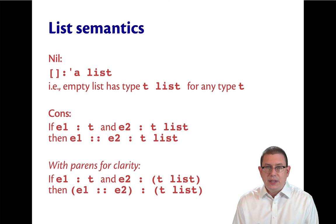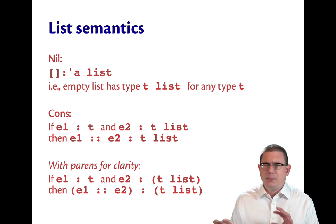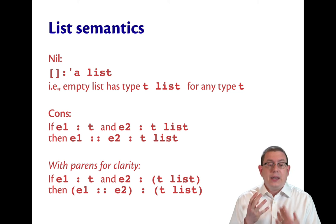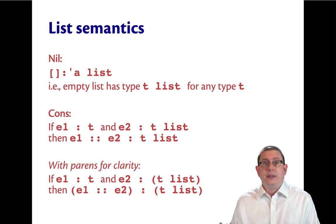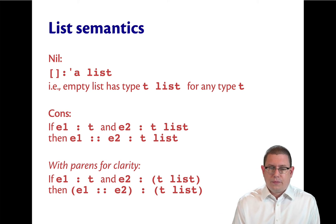So E2 has type T list. It's not that E2 colon T has type list or something like that. And E1 cons E2 has type T list.